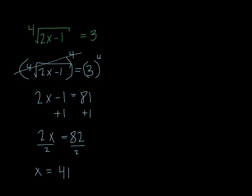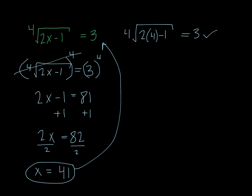Now the next step is just to take this equation and plug it back into the original to make sure it works. So I have here the 4th root of 2 times 41 minus 1 equals 3. So 82 minus 1 is 81. The 4th root of 81 is 3, so it checks out. So x equals 41 is indeed our solution.